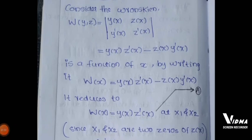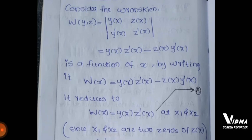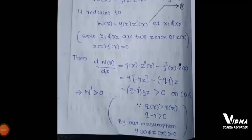Consider the Wronskian W(y, z) of x, defined as the determinant: W(x) = y(x)z'(x) − z(x)y'(x). At x_1 and x_2, since z(x_1) = z(x_2) = 0, the term z(x)y'(x) vanishes, so W reduces to y(x)z'(x) at those points.